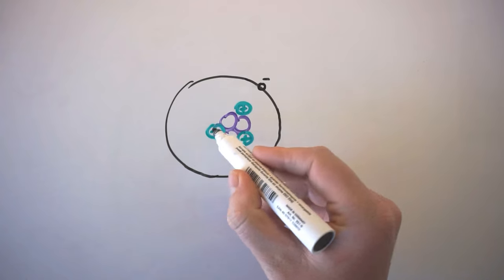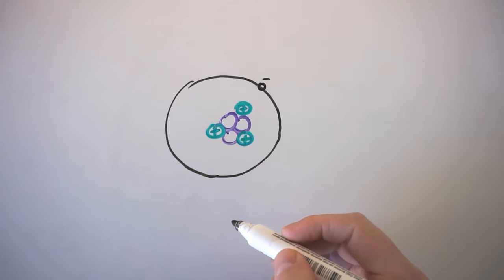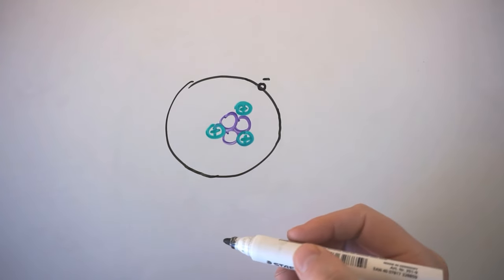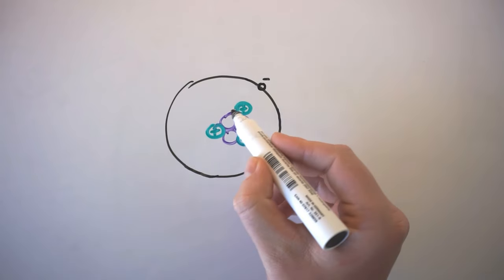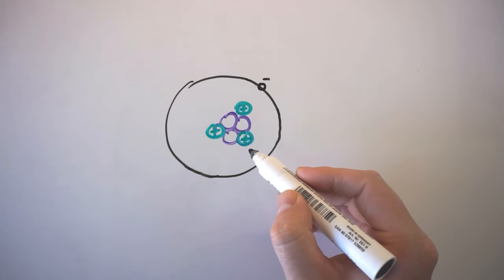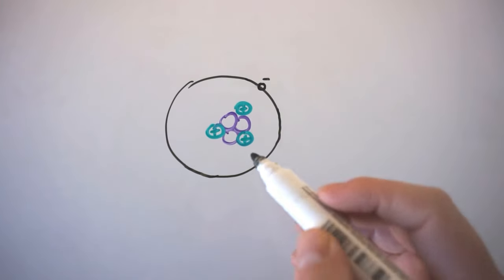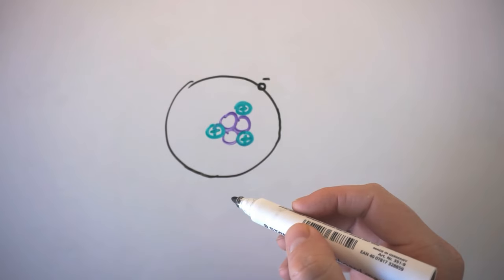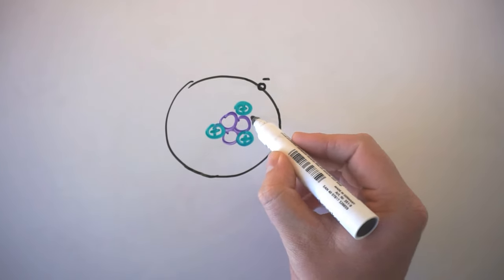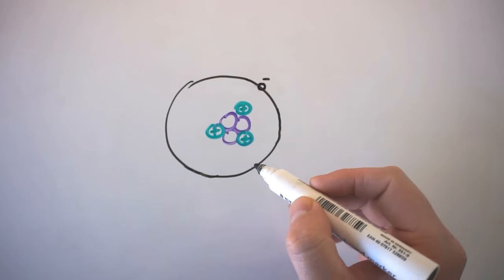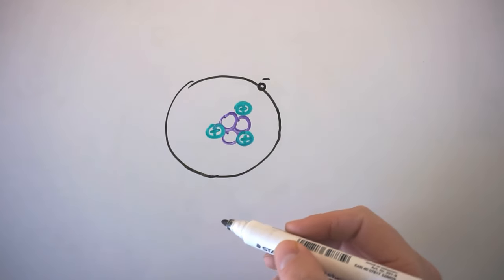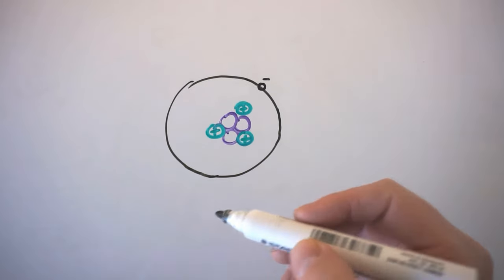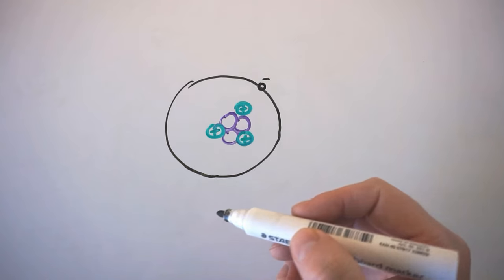The number of protons that an atom has tells us which element that atom is. For example, in this case there are three protons. That tells us that this is the third element on the periodic table, which is lithium. If I had a fourth proton, this atom would then be the fourth element. But with three protons, it's our third element — lithium.